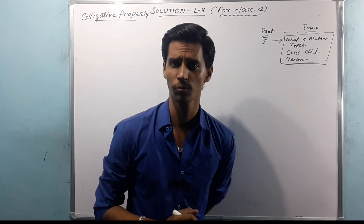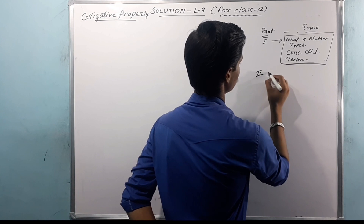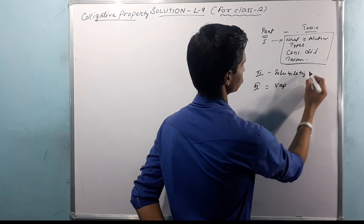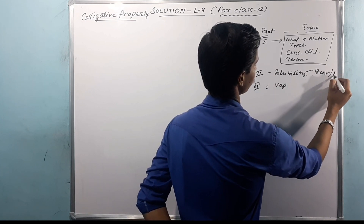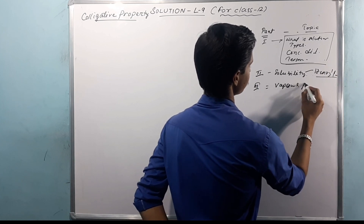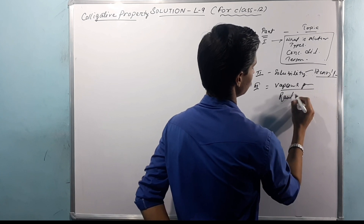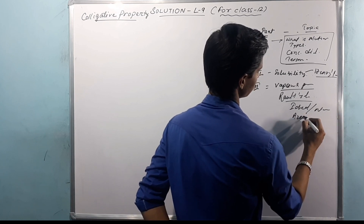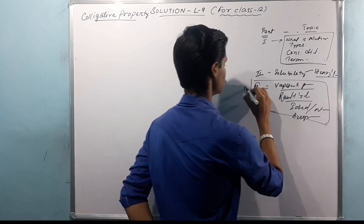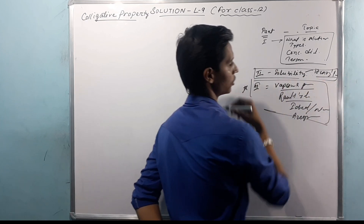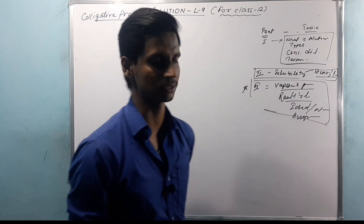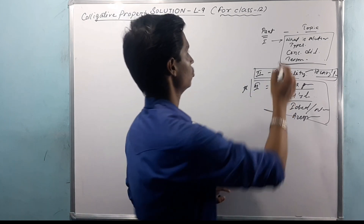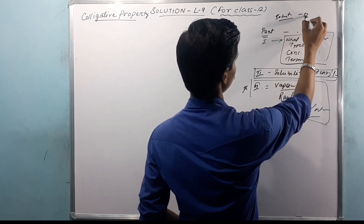Part 2 is called Solubility. Part 3 is called Vapor Pressure. Solubility is associated with Henry's Law. Vapor Pressure is associated with Raoult's Law, which covers ideal solution, non-ideal solution, and azeotropes. Vapor pressure is the most important part, covering questions 12 to 13.